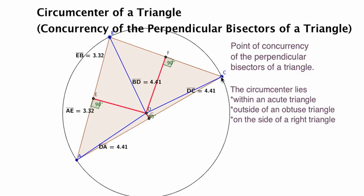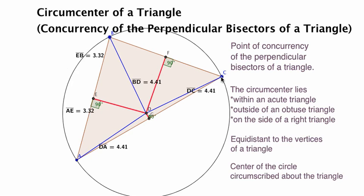Then the circumcenter is equidistant from each of the vertices of the triangle, which makes it the center of the circle that can be circumscribed about the triangle.